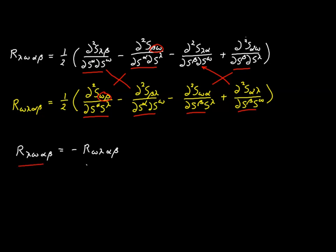We saw that this relationship is true for Riemann normal coordinates, but how do we know it's true in general? Because this is a tensor relationship — to prove it's valid for all coordinate systems, all we have to show is that it works for any one individual coordinate system. If it works for one, it works for all. We know it works for Riemann normal coordinates, so this proves it works for all cases in general.